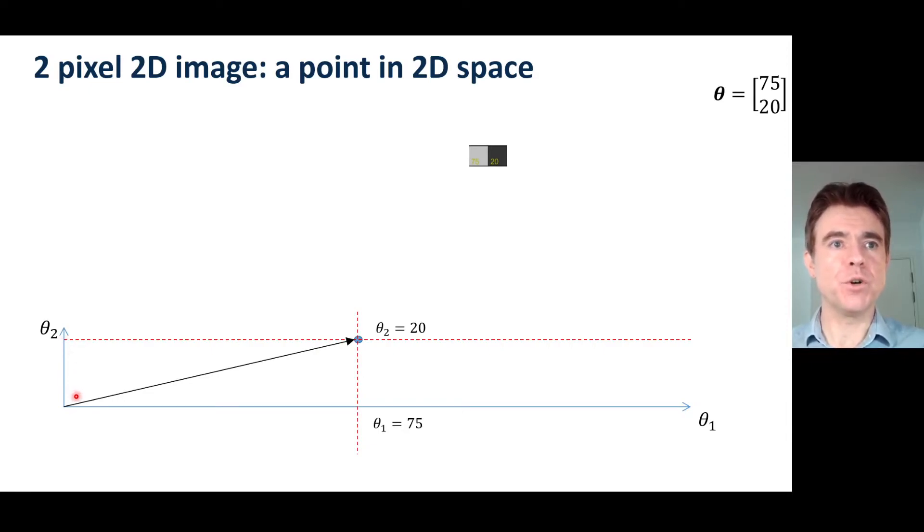So therefore when I go to position 75 on axis 1, position 20 on axis 2, that gives me a 2D coordinate in a 2-dimensional space. This is a 2D vector space and therefore this particular 2-pixel image is a single point in that 2D space.